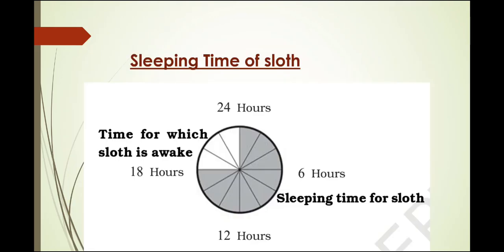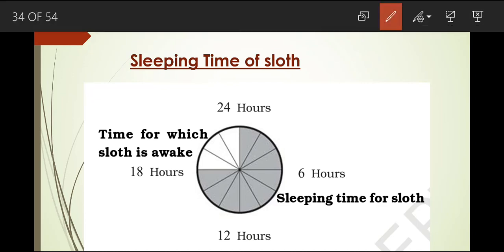Now see how the sleeping time of the sloth is shown in the circle. The circle is divided into 12 fractions, that is 12 parts, and each part means 2 hours. First let us count the time for which the sloth is awake. Each triangle or fraction is denoted by 2 hours — so the time for which the sloth is awake is 6 hours.